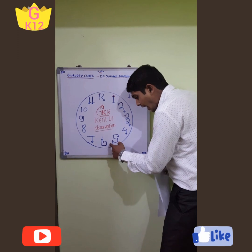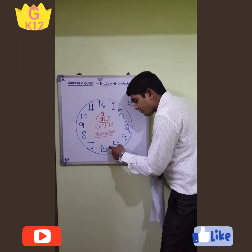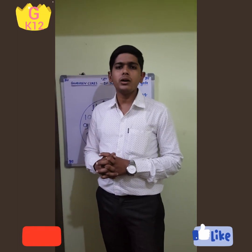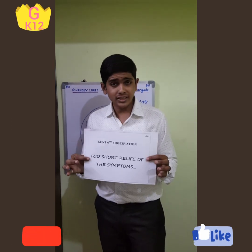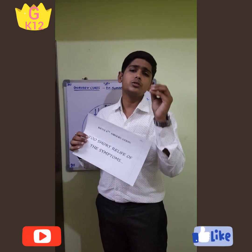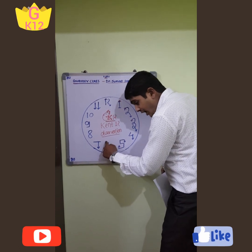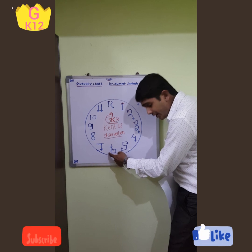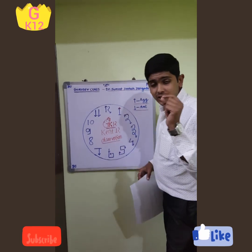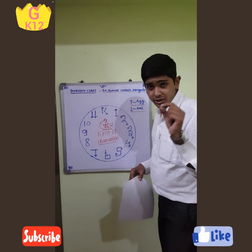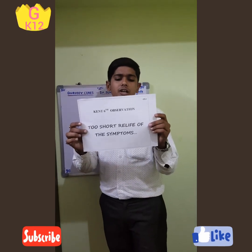In the sixth observation, Dr. Kent said that too short relief of symptoms is observed — the patient gets relief from all complaints, but only for a short period of time. In the watch method, the six number digit indicates a downward going arrow representing amelioration, but after some time the complaints return. This six digit gives us the idea of observation six: too-short relief of the symptoms.